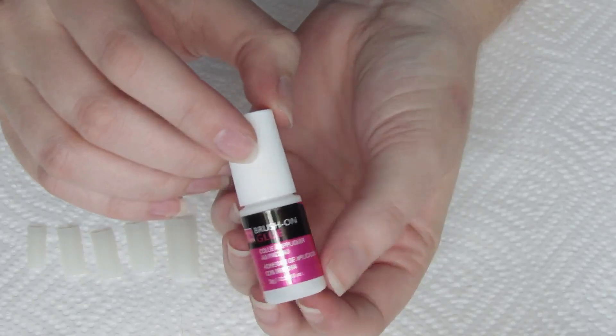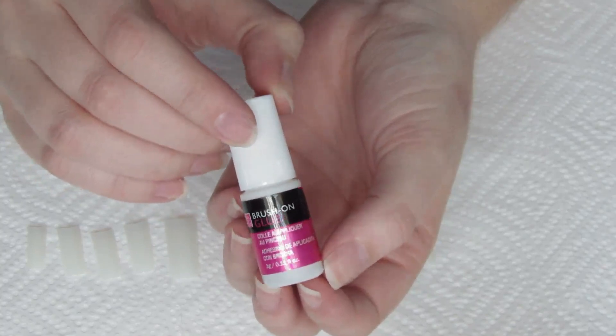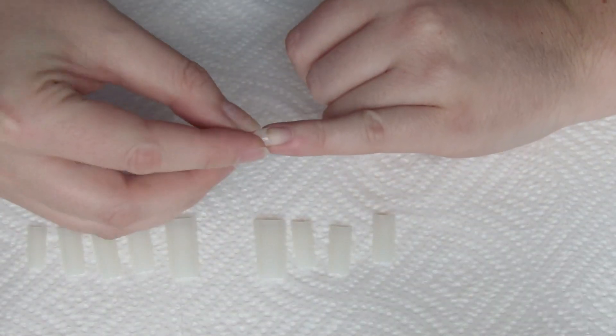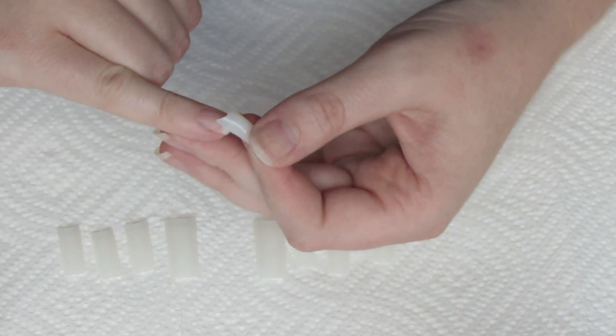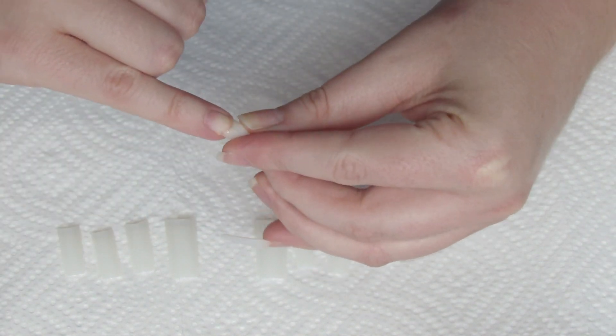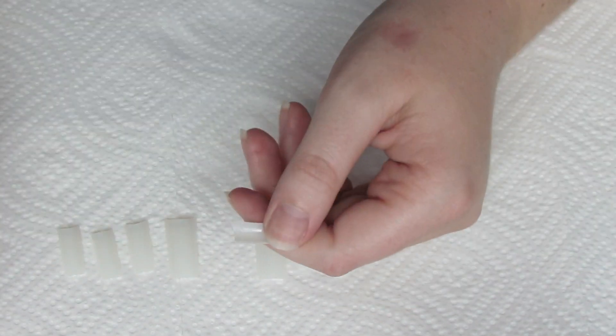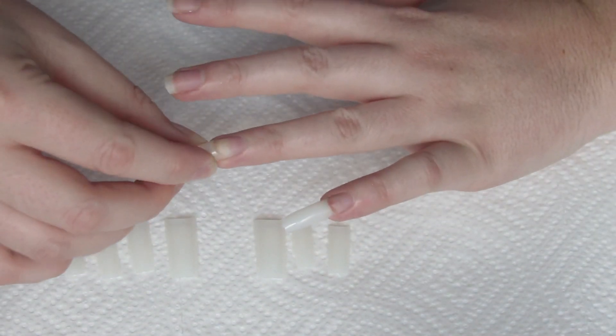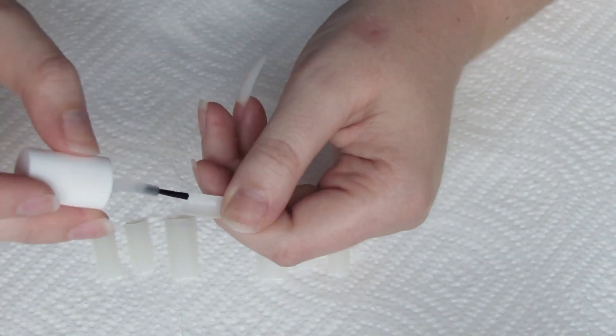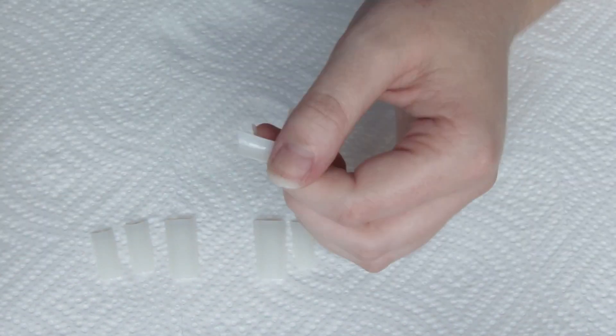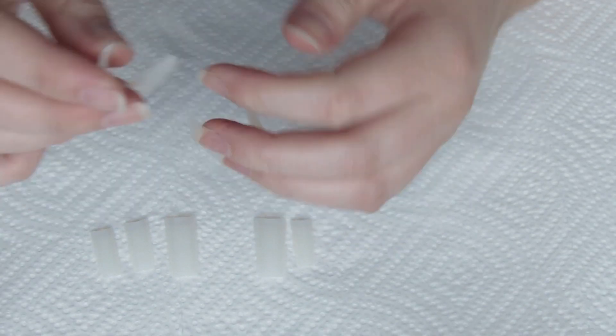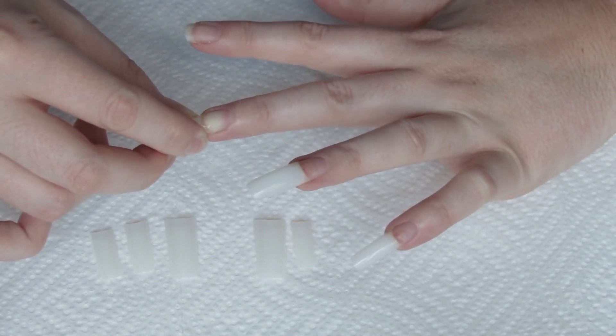I'm taking this brush-on nail glue that I got from Sally Beauty Supply and starting with my pinky, putting a small amount of glue into the well of the nail tip and pressing it onto my finger. Always start with your pinkies because it gives you your thumbs to work with longer. If you start with your thumbs, you're going to be trying to work around using your thumb. So always start with your pinkies first.